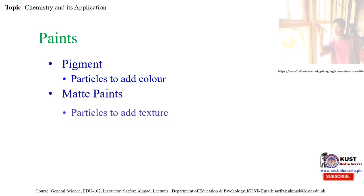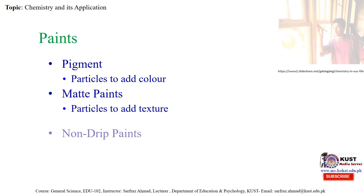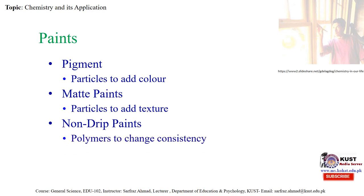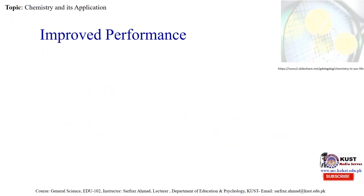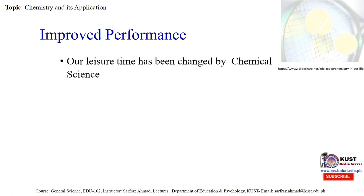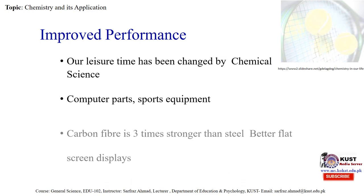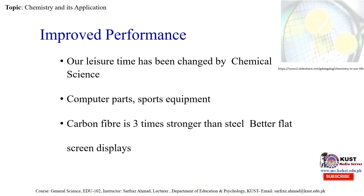Then there is matted paint — particles to add textures. There are also non-drip paints, where polymers change consistency. Chemistry has definitely helped in improving performance. Our daily life has been changed by chemical science: computer parts, sports equipment — carbon fiber is three times stronger than steel — and better flat screen displays.